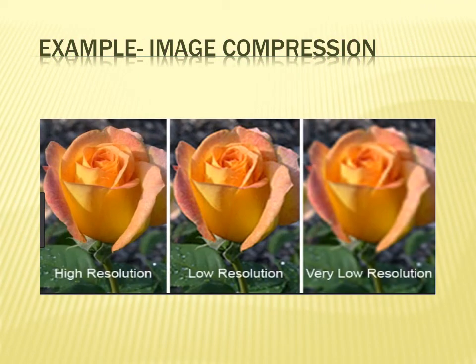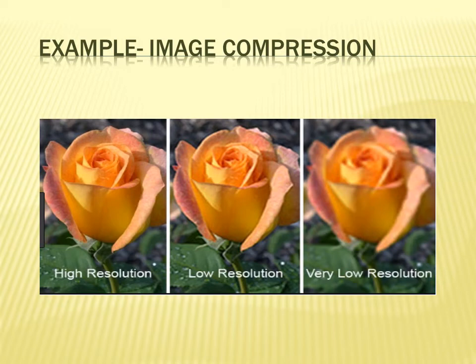Here is an example of image compression. The information conveyed through this picture is that it is a rose and that it is an orange-colored rose. Even if you reduce the resolution — as you can see on the right-hand side, it is a very low resolution image — the size of the image reduces but the information is not lost. The information that it is an orange rose is still clear. This is lossy compression — data is lost but the key information is retained.